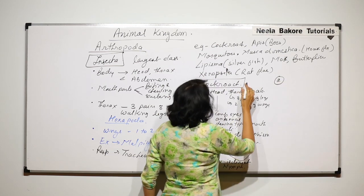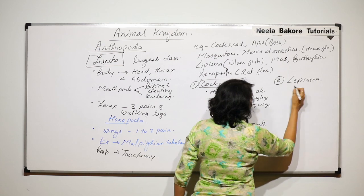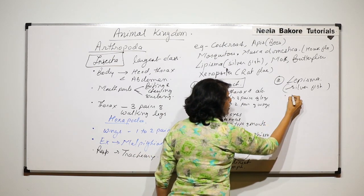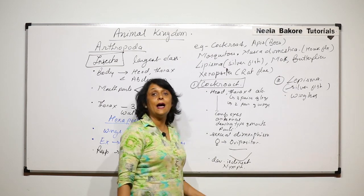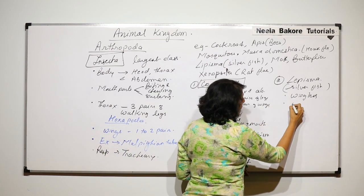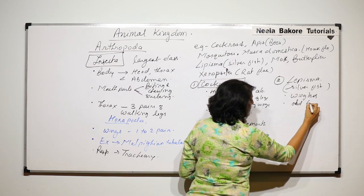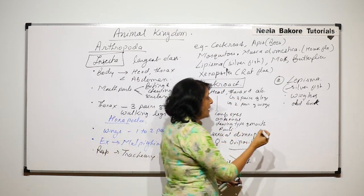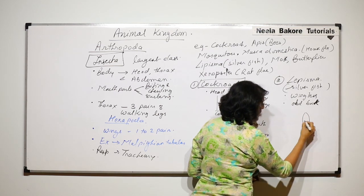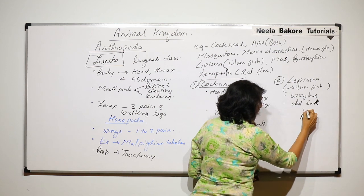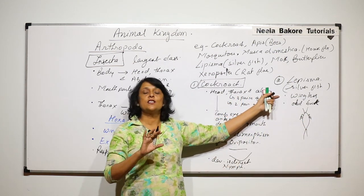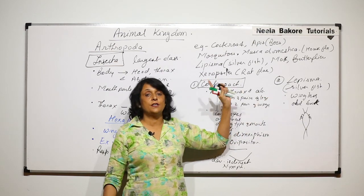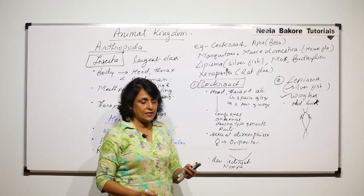The second example is Lepisma, commonly known as silverfish. It is a small wingless insect normally found in old books, and sometimes in clothes kept for a very long period of time. It is a spindle-shaped, silver-colored tiny insect — it is silvery and that is why it is called silverfish, and it is spindle-shaped like a fish. The special feature is that it is wingless. It is not a fish; it is an insect.